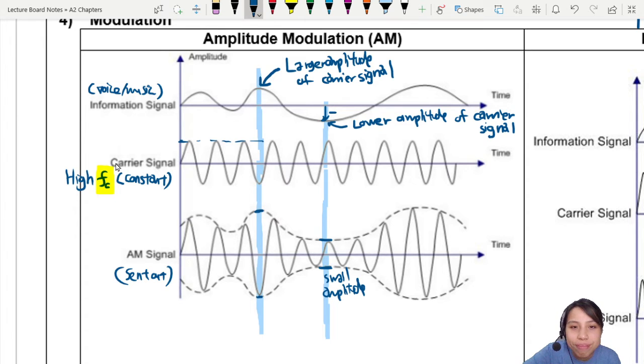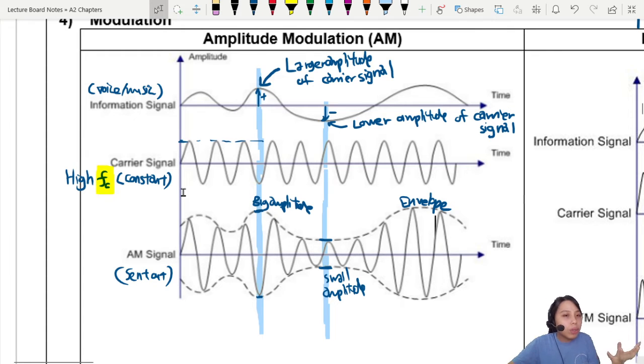So at this particular point, my resultant AM signal - amplitude modulation is AM - it's going to be of a very small amplitude. Why is this small amplitude? Because my displacement of information signal is negative. The other one, displacement is very positive, so I say big amplitude. So I make here a very big amplitude at this particular instance in time. And so I just keep going on. Whatever information is now encoded as the shape or the envelope of the AM signal.